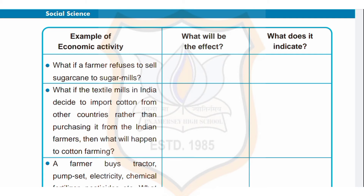Looking at the table of economic activities in the textbook: first example — what if a farmer refuses to sell sugarcane to sugar mills? The effect will be that the primary sector product, sugarcane, will not reach the secondary sector. Hence, the sugar industry will not be able to produce and may shut down, indicating that secondary sector activity cannot be done without the help of the primary sector.